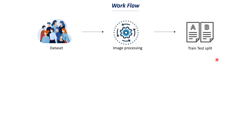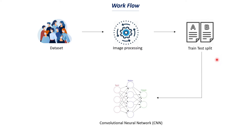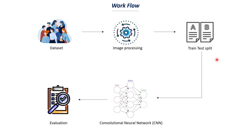We feed this data to our convolutional neural network, which learns how a person with a mask looks and how a person without a mask looks. Once training is done, we evaluate the CNN with evaluation metrics, and then we build a predictive system where you can feed an image and it will tell you whether that person is wearing a mask or not.